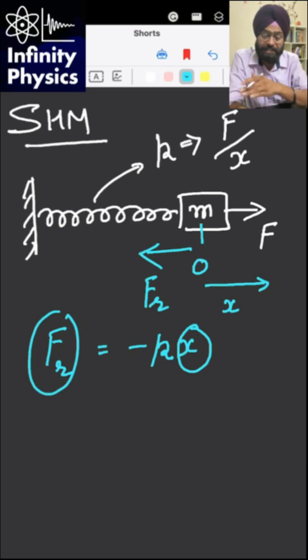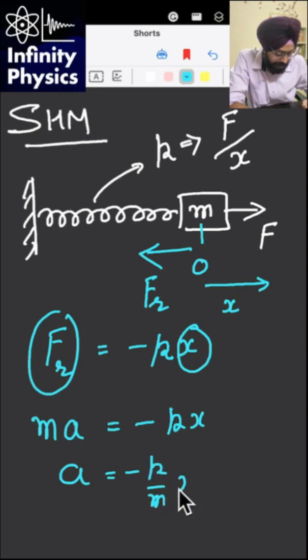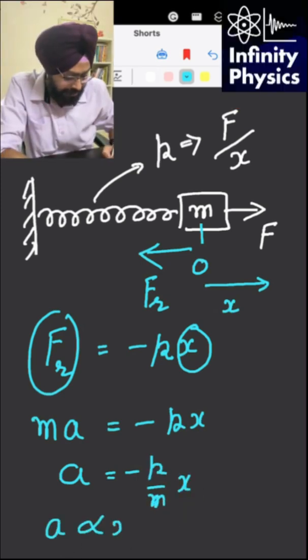So this is the restoring force and the particle which executes this kind of motion in which the acceleration, mass into acceleration is force, it is minus kx, and acceleration becomes minus k by m into x. And here acceleration is always directly proportional to displacement of particle from the mean position and opposite to it.